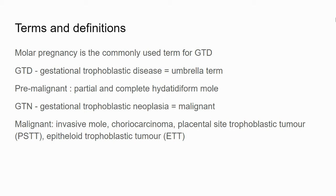such as the partial and complete hydatidiform mole, and then the malignant conditions — gestational trophoblastic neoplasia — which include invasive mole, choriocarcinoma, placental site trophoblastic tumour, and epithelioid trophoblastic tumours.